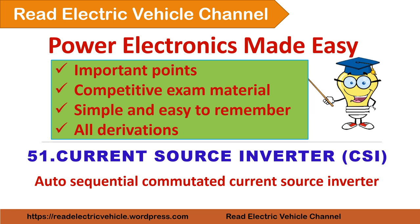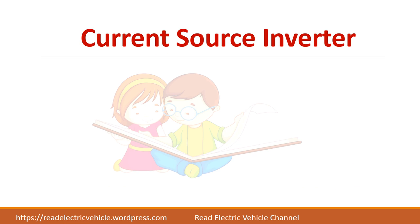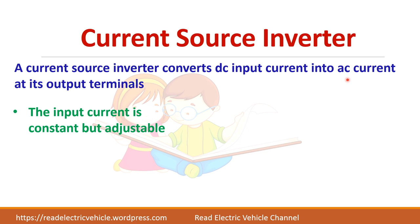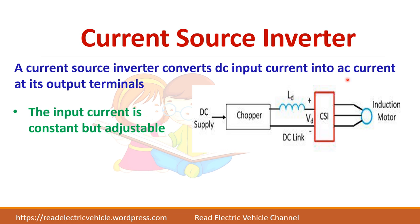In this video we will see about auto sequential commutated current source inverter. A current source inverter is a power electronic converter which converts the DC input current into AC current. The input current is constant but we can adjust the magnitude of the current.